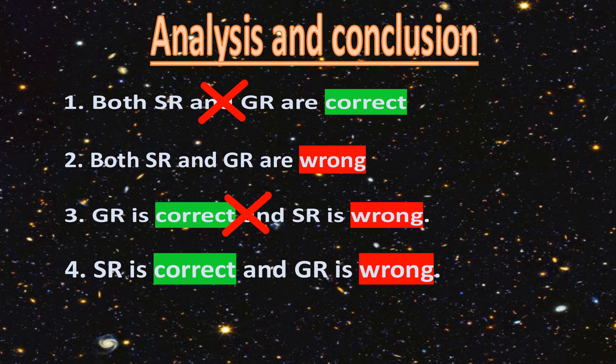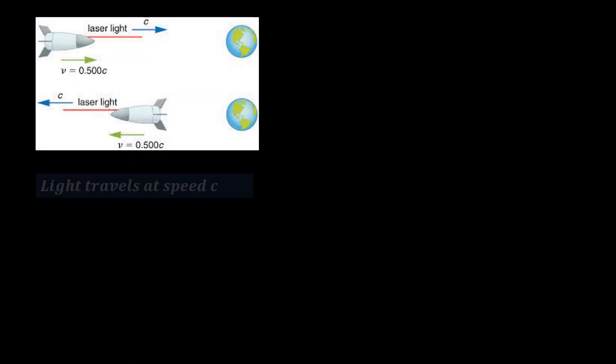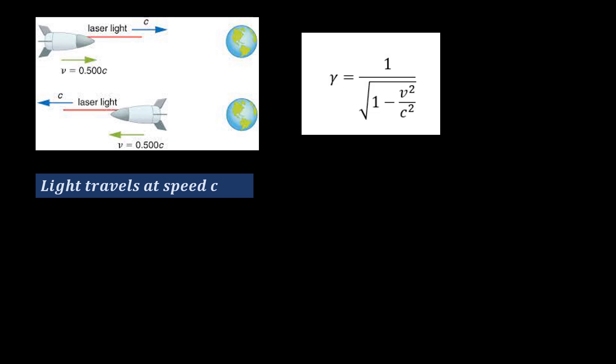Next, special relativity is correct and general relativity is wrong. This statement could be true since special relativity is independent of general relativity. However, there have been a lot of proofs that special relativity is wrong. The premise of special relativity is that light travels at exactly the same speed C in any inertial reference frame — Einstein's second postulate. From the formalism of special relativity, we have the gamma factor, equal to 1 over the square root of 1 minus V squared over C squared, which appears in every relativity equation.